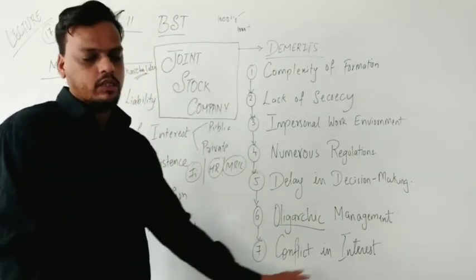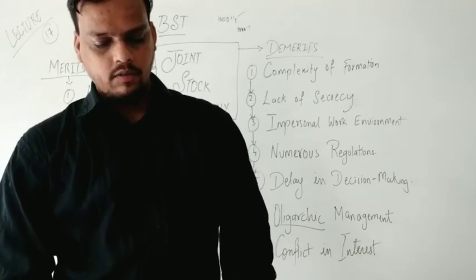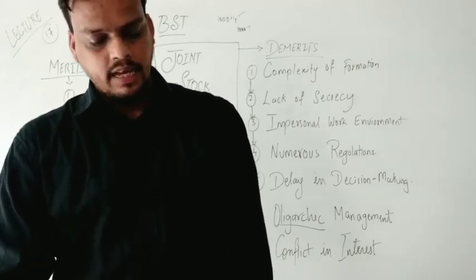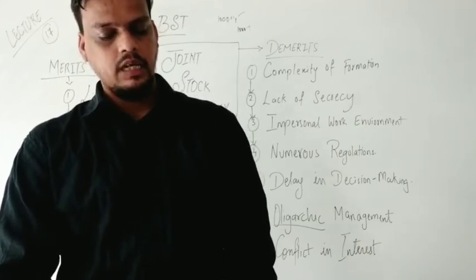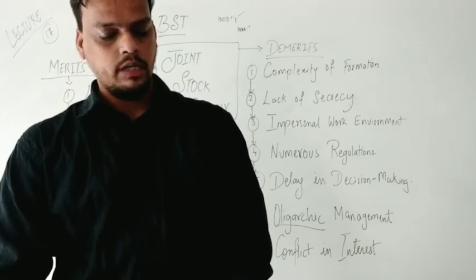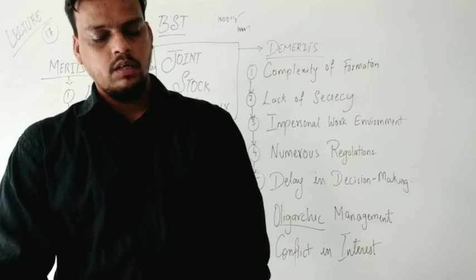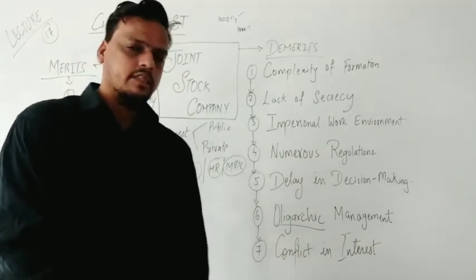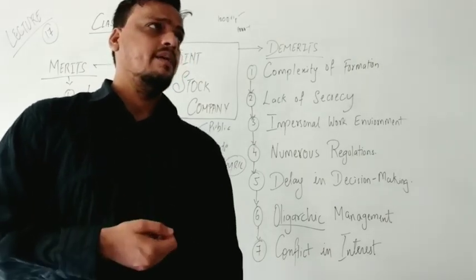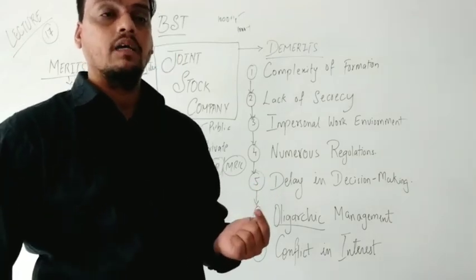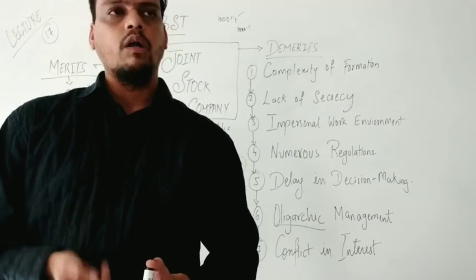Point number seven is conflict of interest. The stakeholders have huge problems related to conflicting interests. There may be conflict of interest amongst various stakeholders of the company. For example, employees may be interested in higher salaries, consumers may desire better quality products at lower prices, and shareholders may ask for higher dividends. These demands pose very difficult problems in satisfying all desired interests simultaneously.